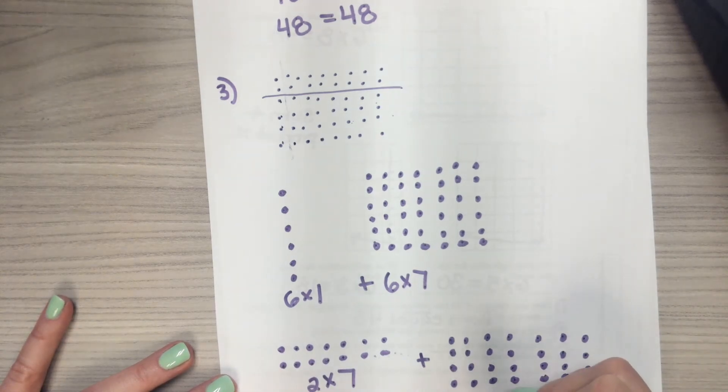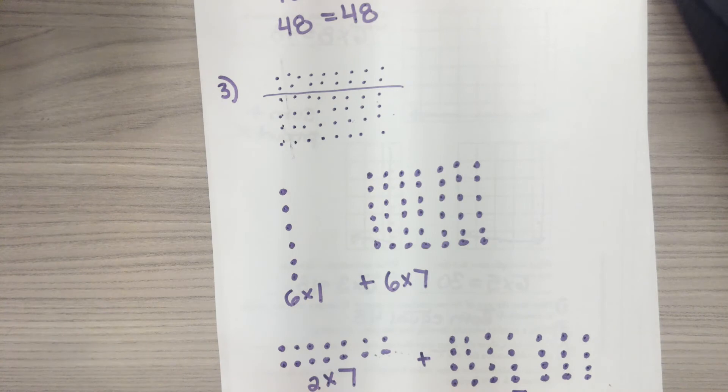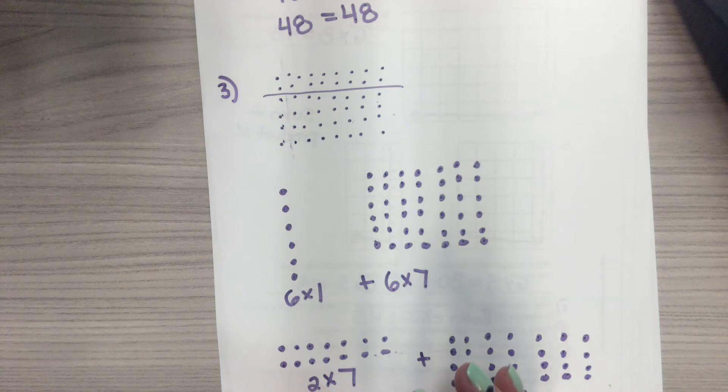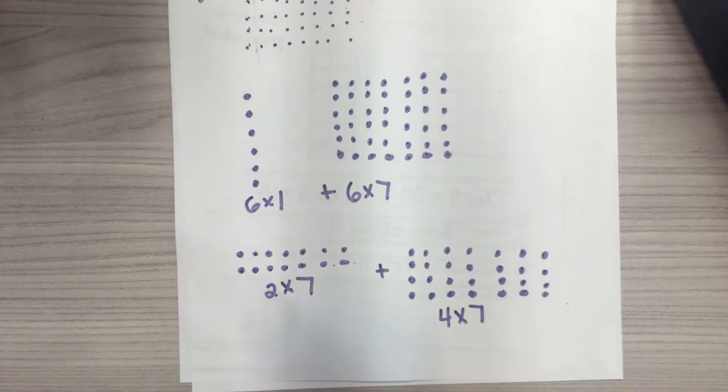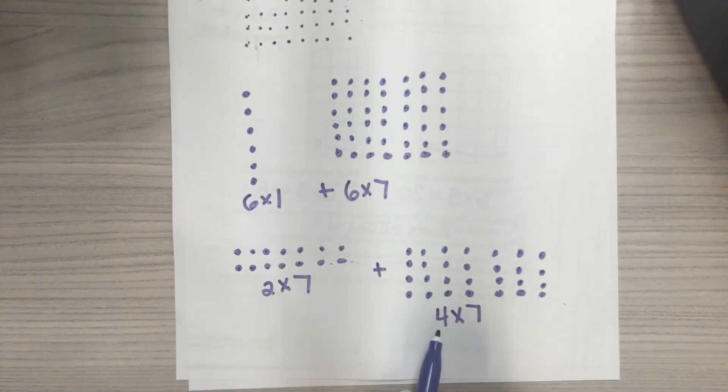Now I have a four by seven. So all we're doing is we're practicing taking an array and breaking it into multiple arrays. And we want to make sure though, it still equals the same product. So six times one plus six times seven is 48. And two times seven plus four times seven is still 48. That's it for arrays habit part one.